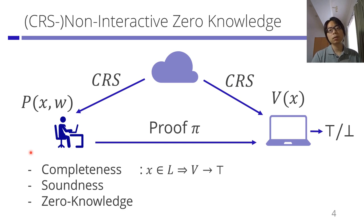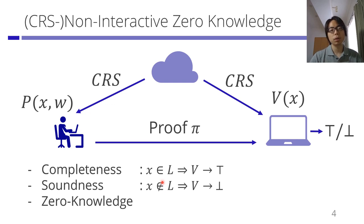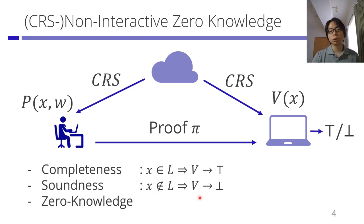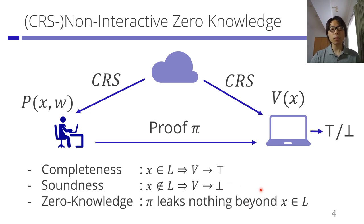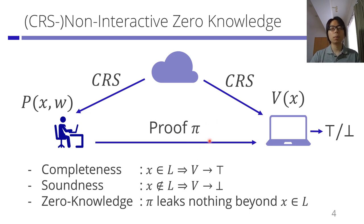Completeness dictates that if the statement X is in the language, then the verifier should accept. Soundness is the opposite: a cheating prover, if it has a statement which is not in the language, should not be able to fool the verifier to accept. Zero knowledge means any verifier looking at proof pi cannot learn anything more than the fact that the statement X is in the language — the witness, in particular, will be hidden from the proof.